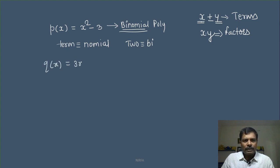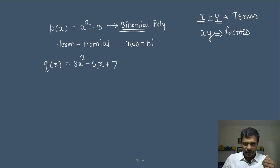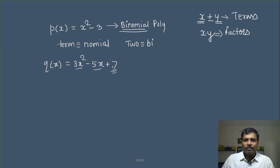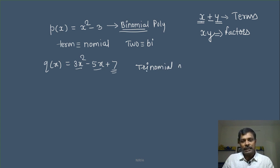अब कोई दूसरी polynomial लेते हैं — 3x square minus 5x plus 7। क्या यह polynomial है? है! कितने terms हैं? यह first term, यह second term, और यह third term — तीन term हैं। तीन को बोलते हैं 'tri', और terms को 'nominal', तो यह trinomial polynomial है। इस polynomial को terms से count किया जाता है। अगर 4 term रहेंगे तो quadra polynomial — यह नाम और उसका meaning याद रखना है।